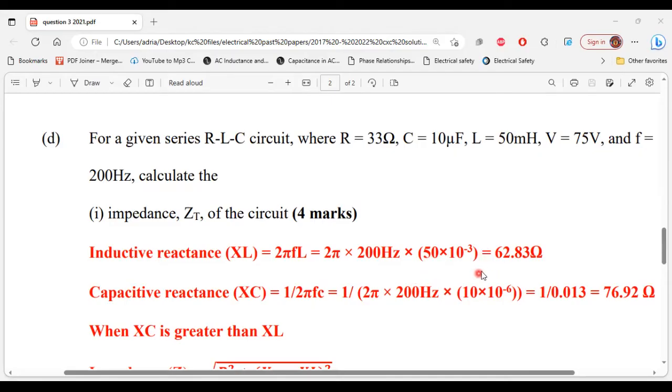That will equal to 62.83 ohms. So that's the inductive reactance value. And next up, capacitive reactance XC is equal to 1 divided by 2πfC. So we're going to write the denominator first: 2π × 200 × 10 × 10⁻⁶, that will give us 1 over 0.013. So 1 divided by 0.013 will equal to 76.92 ohms, and that's the capacitive reactance value.